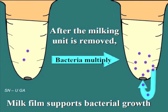Post-dipping is also important. After milking, a milk film left on the teat supports bacterial growth. Post-dipping removes that milk film and cuts bacterial numbers down, preventing bacteria that were transferred to the teat skin from multiplying and entering the quarter.